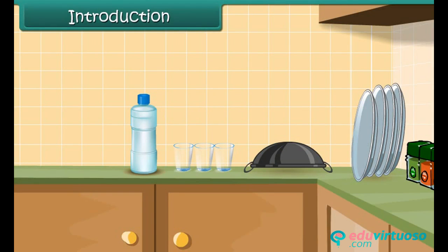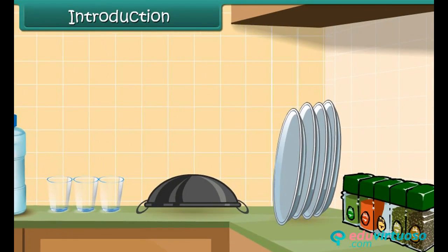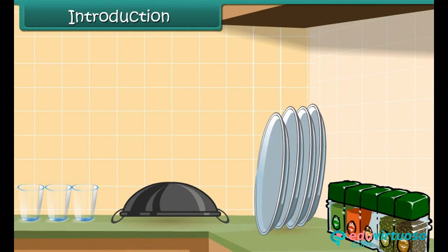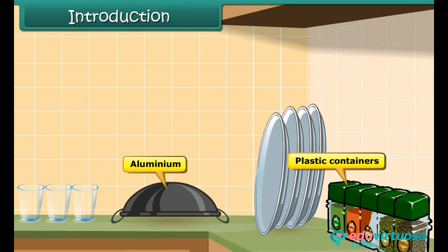Your kitchen shelves must be neatly arranged with rows of food containers, mostly made up of plastics. Plastics have taken so much prominence in our lives that we have replaced materials like aluminium, iron, steel and glass with plastics. So let us find out more about plastics in this lesson, where you will study about the general properties of plastics and their importance in our everyday lives.